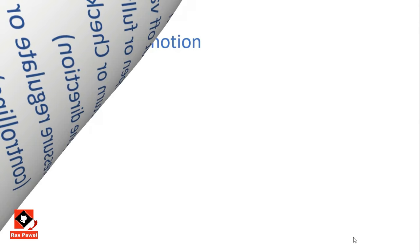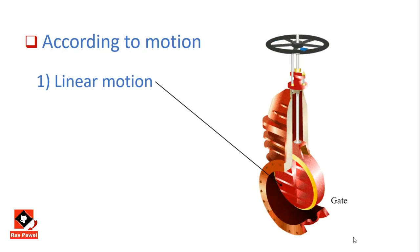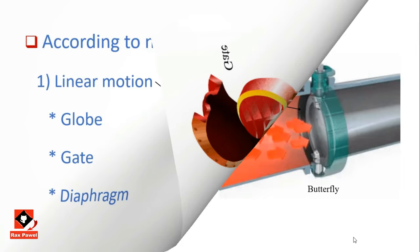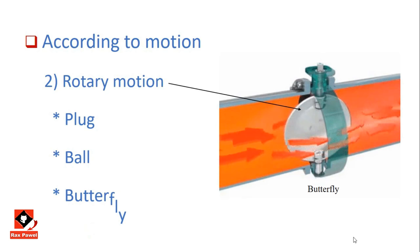The second classification is according to motion. First we have linear motion — under this type we have globe, gate, and diaphragm valves. The second is rotary motion — under this type we have plug, ball, and butterfly valves.